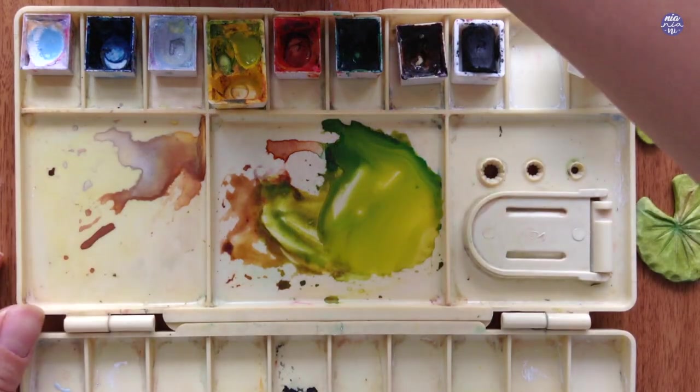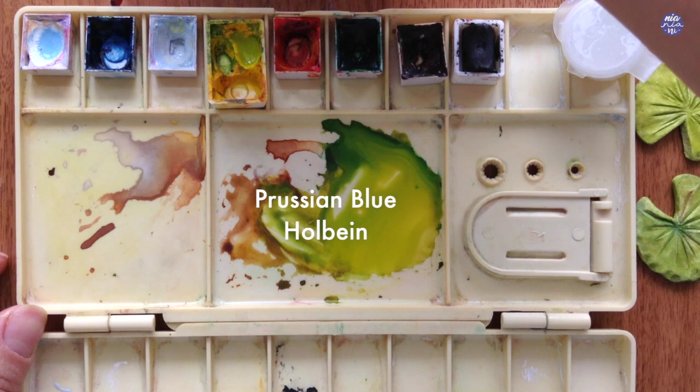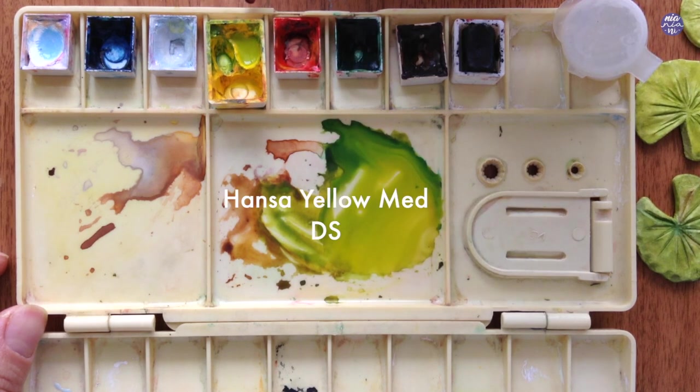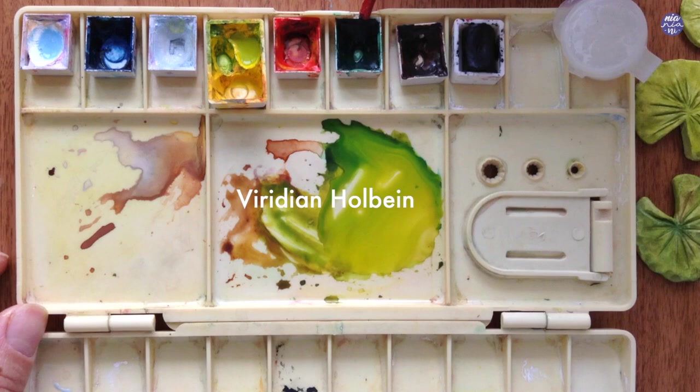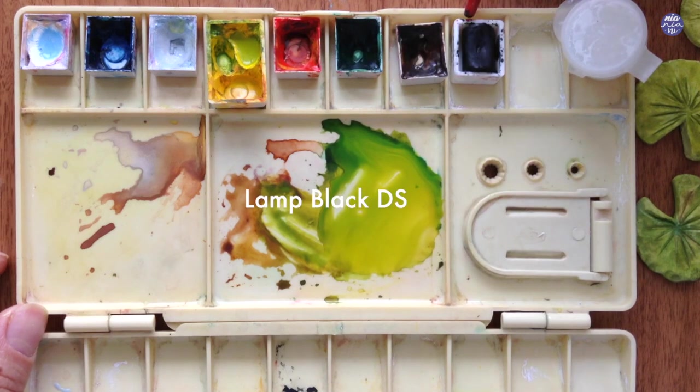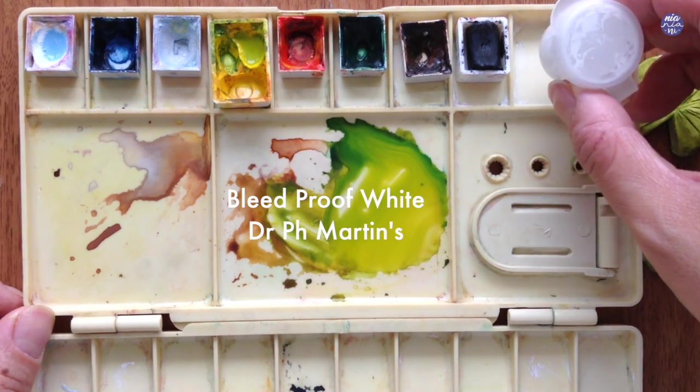Let me just go over the color quickly. Firstly, this is Chinese White by Holbein, Prussian Blue by Holbein, Grey of Grey by Holbein, Hansa Yellow Medium by Daniel Smith, Vermilion by Holbein, Viridian by Holbein, Burnt Umber by Holbein, Lamp Black by Daniel Smith, and Bleed Proof White by Dr. Ph. Martens.